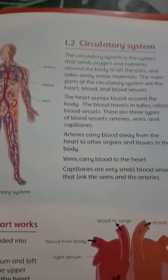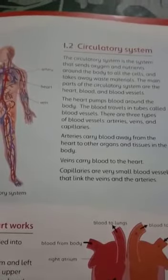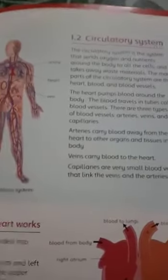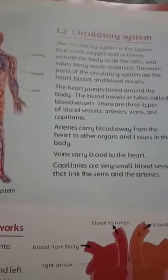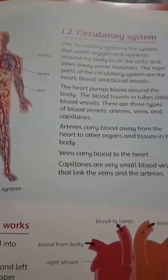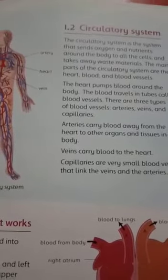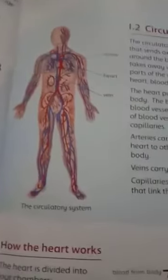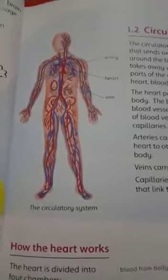Assalamualaikum girls, open page number nine: circulatory system. Today we are going to study about the circulatory system — how the blood moves and how it transports oxygen and nutrients around the body. Our circulatory system consists of the heart, blood, and blood vessels. This picture shows the circulatory system of your body.